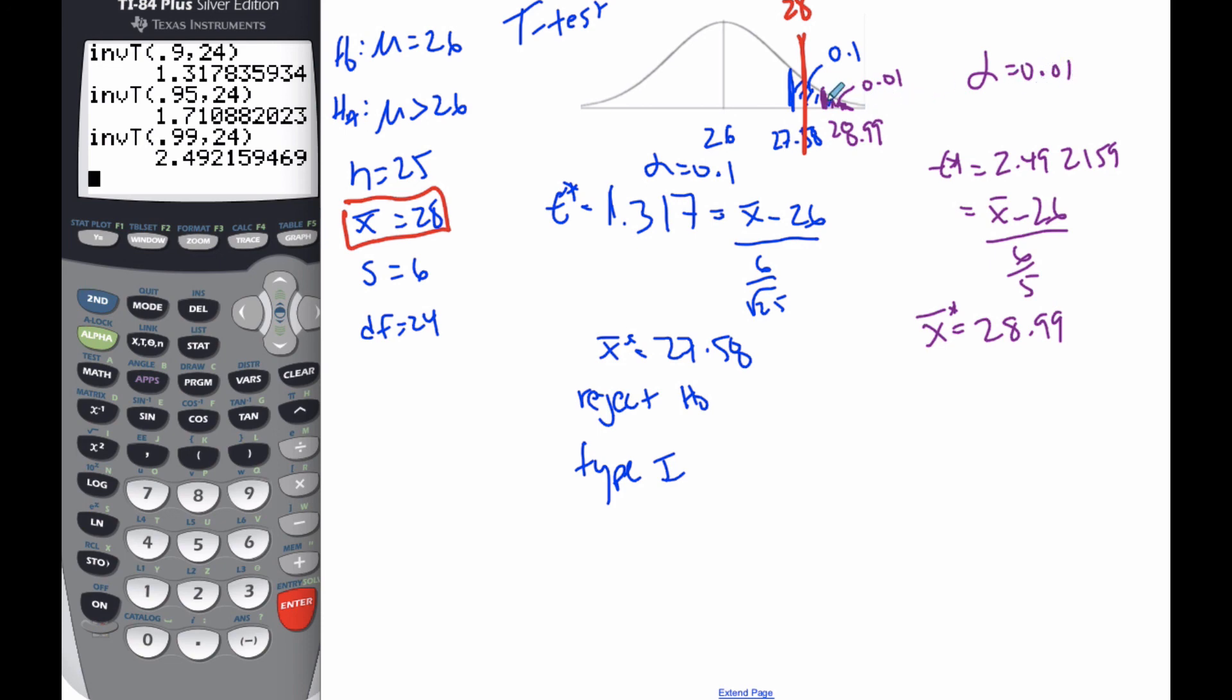However, if my alpha value is 0.01, here's my critical region. My 28 is outside that region, so I fail to reject H₀. I may have meant to throw out the null hypothesis but didn't, and that's where a Type 2 error falls. The easy way to remember which is which: Type 1 falls inside the critical region and equals alpha. Type 2 is the other situation.